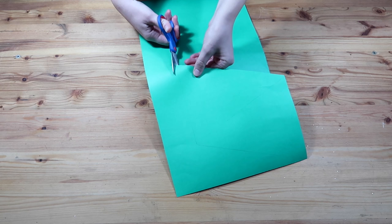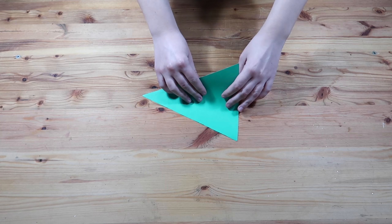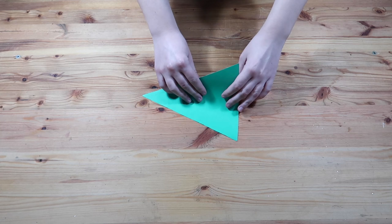Start by cutting out a triangle shape from the card. You can make this as big or as small as you prefer. Next you need to fold the triangle perfectly in half and down that centre line poke two small holes.